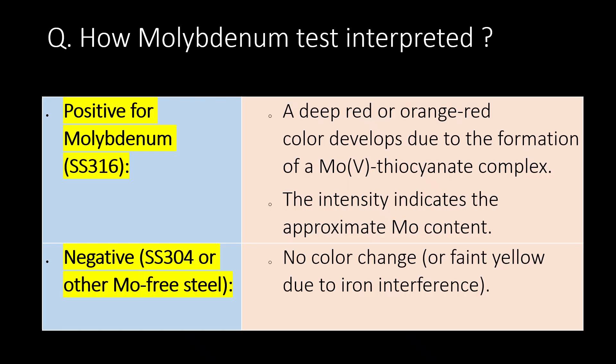How is the molybdenum test interpreted? A deep red or orange-red color develops due to the formation of a molybdenum thiocyanate complex, indicating a positive result for molybdenum. In the case of a negative test, there is no color change or only a faint yellow due to ion interference.